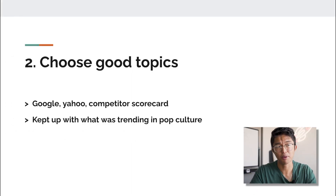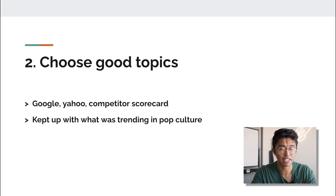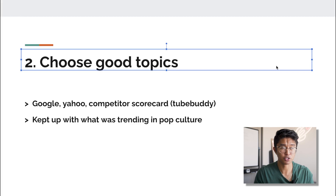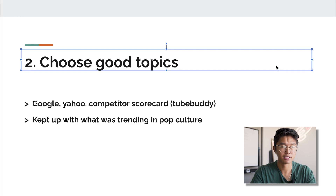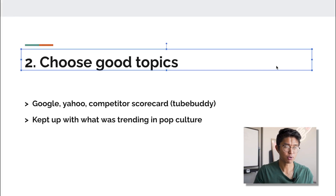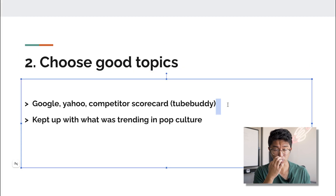Moving on to the second thing: you want to make sure you're able to choose good topics. Choosing good topics has been absolutely crucial in allowing me to net over $370,000 from YouTube. Good places to find topics include Google News, Yahoo News, and the competitor scorecard from TubeBuddy. With those three sources you should be able to find good topic ideas, and you want to make sure whatever you're finding keeps up with trending or current events.